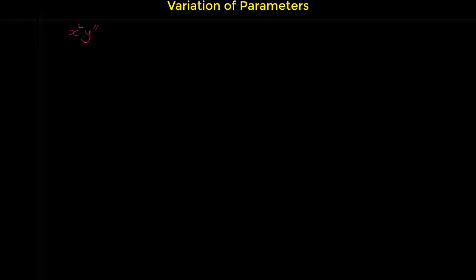In this video, I will show you how we can verify a given function is a solution for a homogeneous differential equation, and then we find the particular solution for the given non-homogeneous differential equation with the method of variation of parameters. The given differential equation is x squared y double prime plus x y prime minus y equals 36x to the fifth. We want to prove that these two functions, x and x to the negative one, are the solutions for the corresponding homogeneous equation.